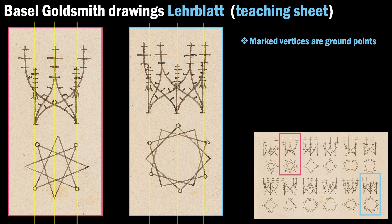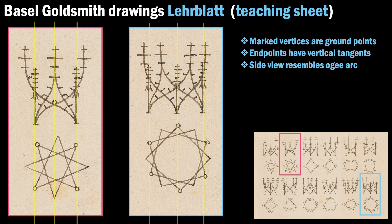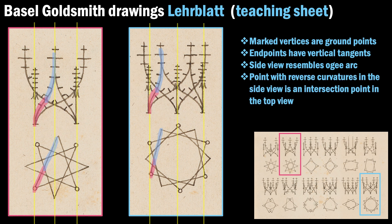Marked vertices are ground points with zero height. The end points of the 3D curves have vertical tangents. The curves in the side view projection resemble OG arcs, one of the most characteristic elements of the Gothic style. An OG arc consists of two circular arcs turning in opposite directions. More importantly, the point where the two circular arcs meet corresponds to an intersection point in the top view.